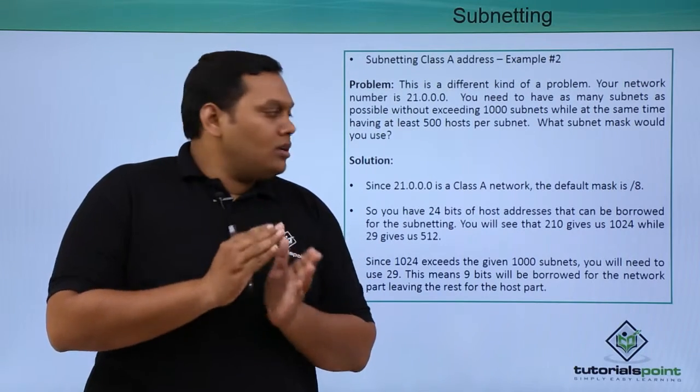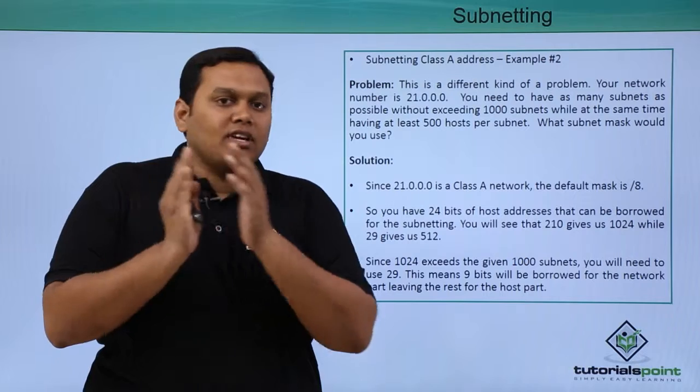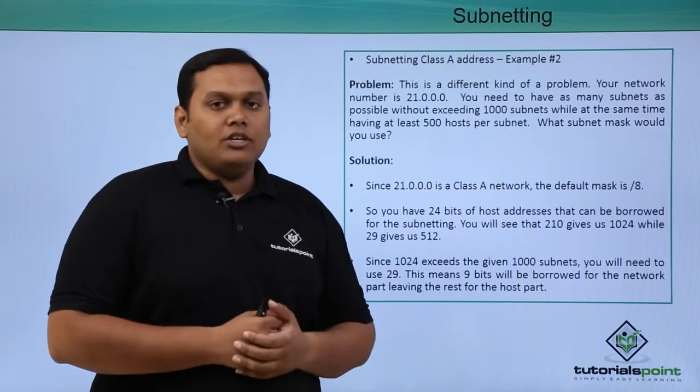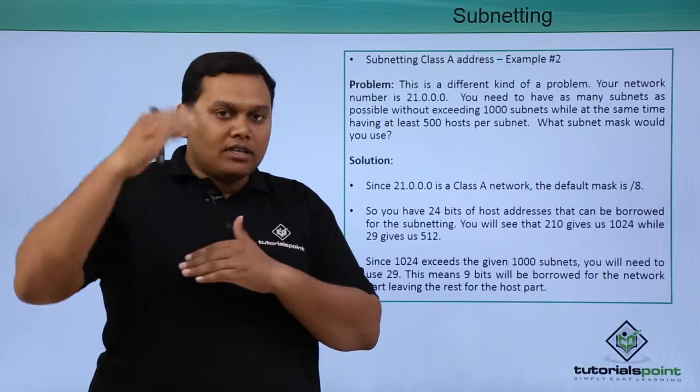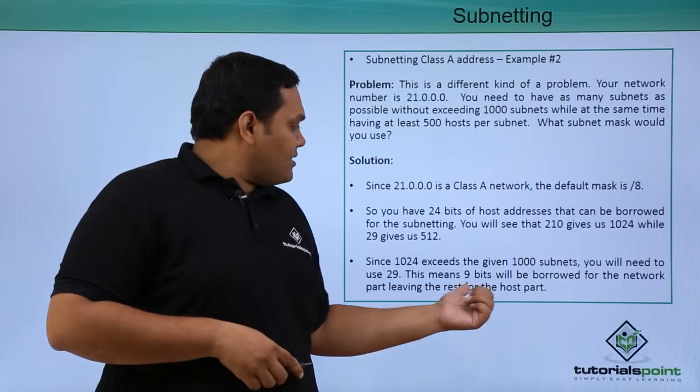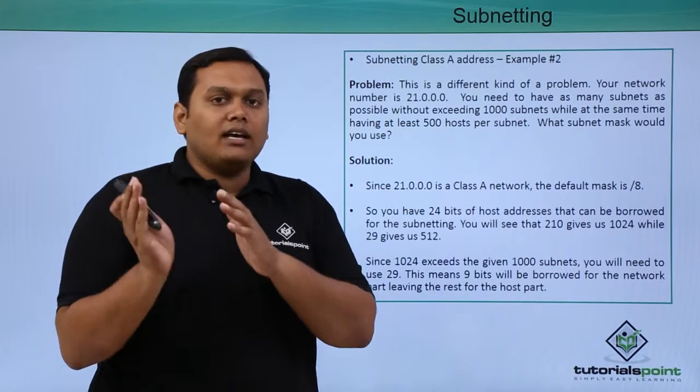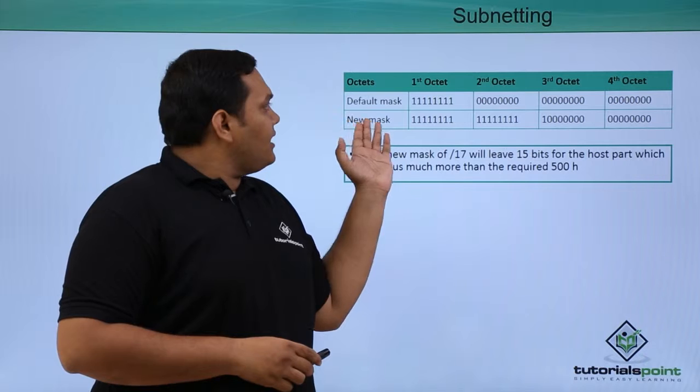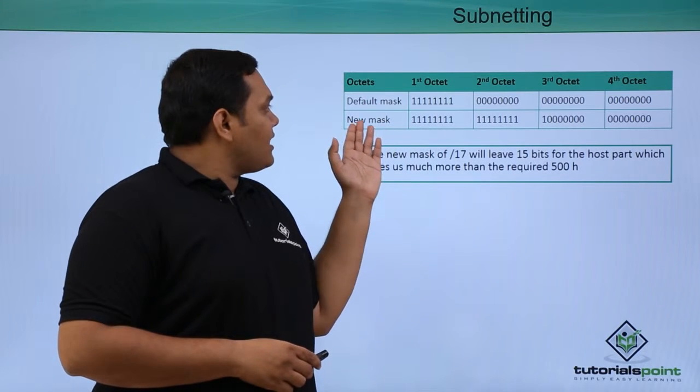1024 exceeds 1000, so we would not consider it. We consider 2^9 which gives 512. We convert the subnet mask and you can see that is mentioned here, and you can see how they are converted or borrowed.